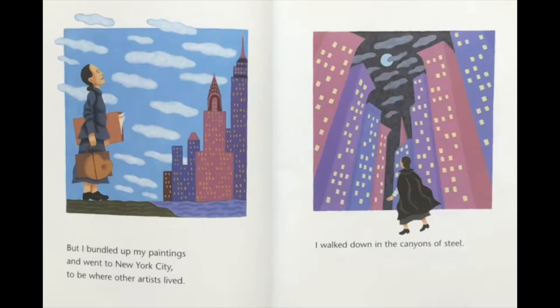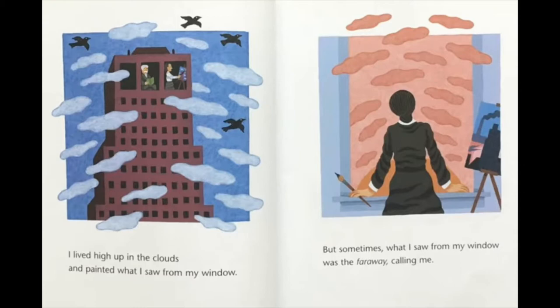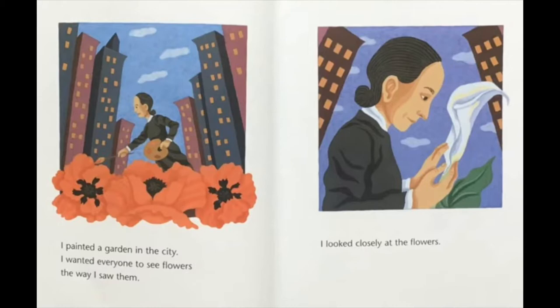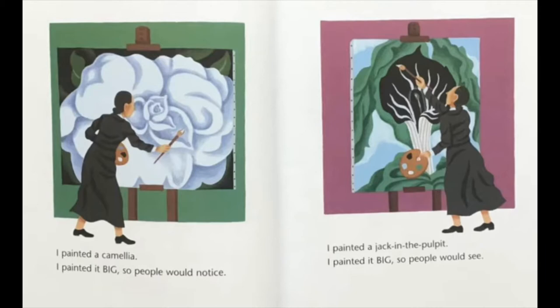'But I bundled up my paintings and went to New York City to be where the other artists live. I walked down in the canyons of steel. I lived high up in the clouds and painted what I saw from my window. But sometimes what I saw from my window was the far away calling me. I painted a garden in the city. I wanted everyone to see flowers the way I saw them. I looked closely at the flower. I painted a camellia. I painted it big so people would notice. I painted poppies and petunias and sunflowers and jimson weed and irises and apple blossoms.'